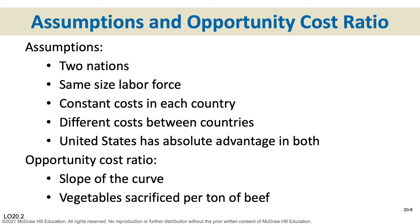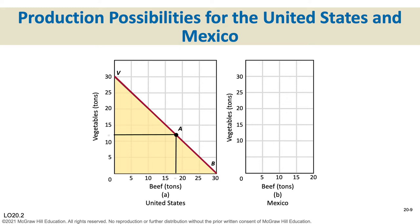We start the analysis by looking at a production possibilities curve in the United States and one in Mexico, looking at just two categories: tons of vegetables versus tons of beef. In the United States, the production possibilities curve in this example shows 30 tons of vegetables if no beef is produced, or 30 tons of beef if no vegetables are produced. The current production spot is 12 tons of vegetables and 18 tons of beef.